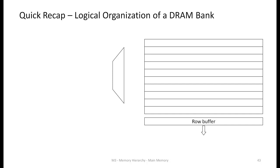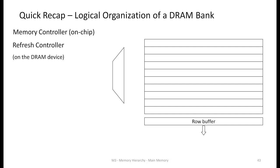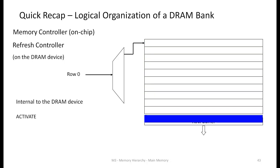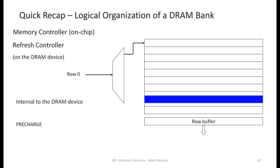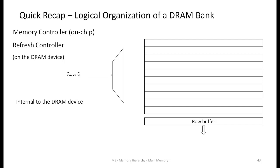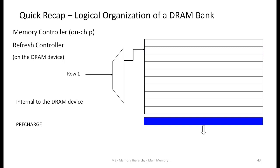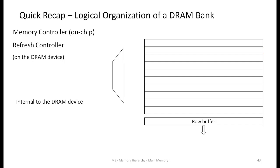A quick recap of the refresh process: the memory controller, which is on-chip, occasionally sends a refresh command to the DRAM device. The refresh controller on the DRAM device takes over and issues back-to-back activates — a particular row is selected and read into the row buffer, followed by a precharge where the data is written back to the original position. The refresh controller issues a sequence of activate and precharges for the rows in the banks or sub-banks of the DRAM device.